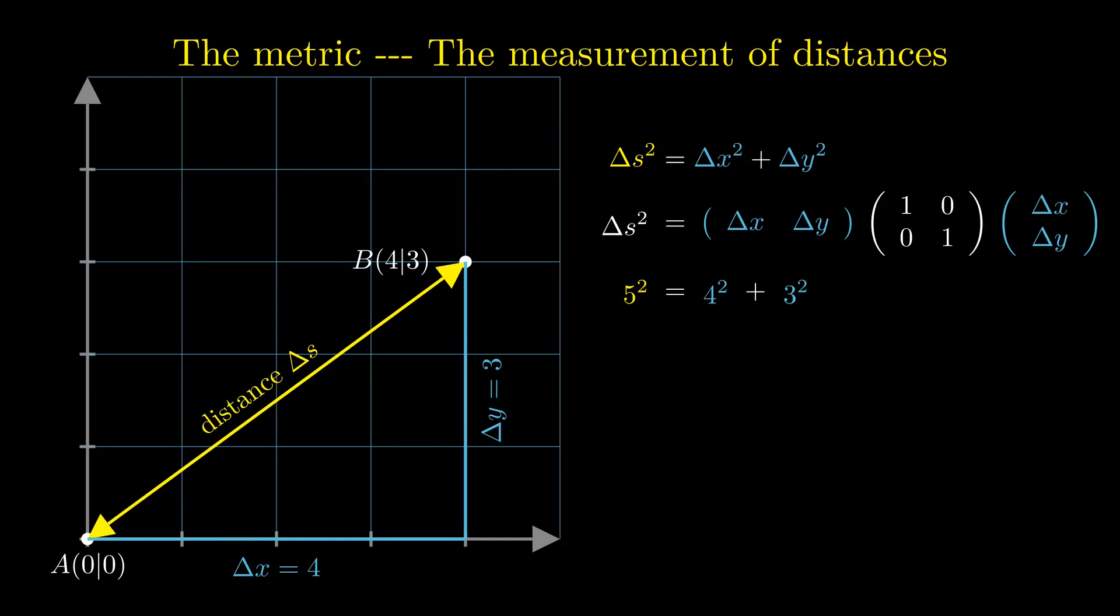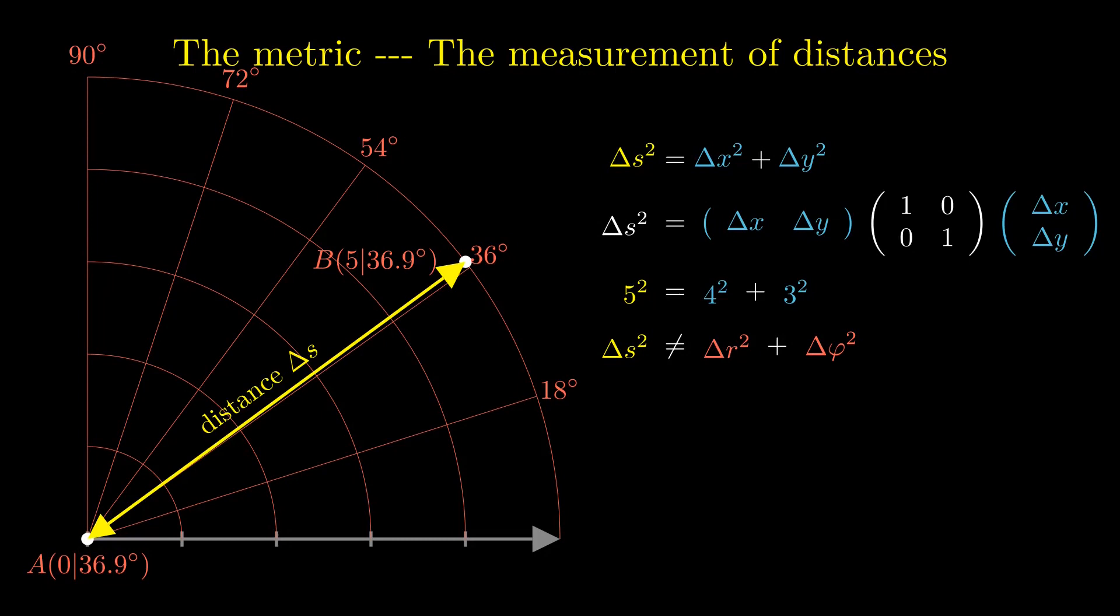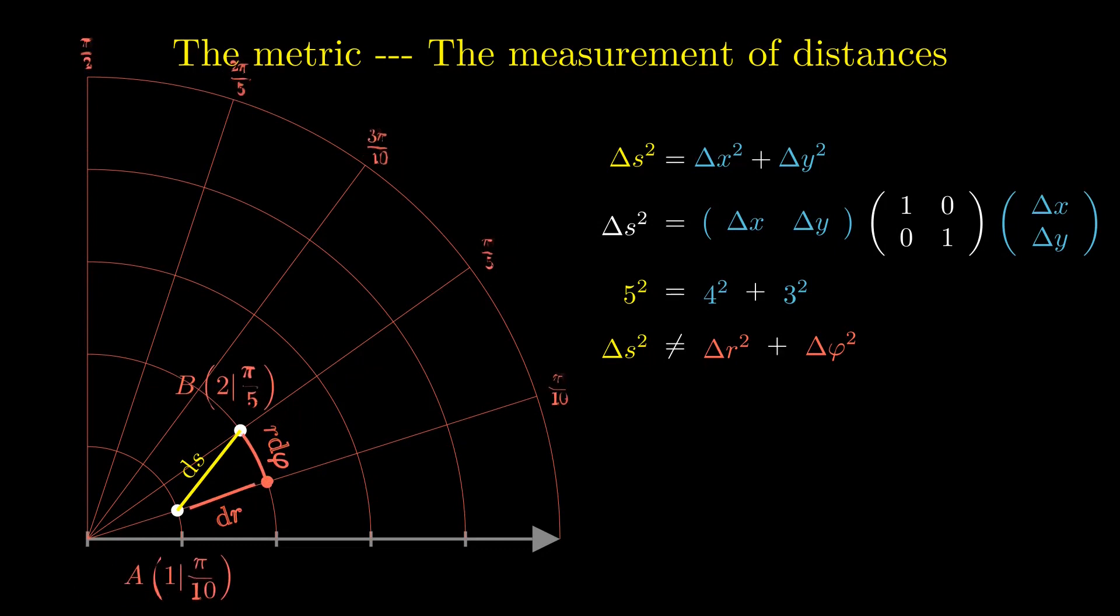In polar coordinates, the distance is not simply related to the sum of the squares of the coordinate differences. Only when small distances are considered, a similar relation can be obtained. In polar coordinates, the metric depends on the position where the distance is going to be measured.